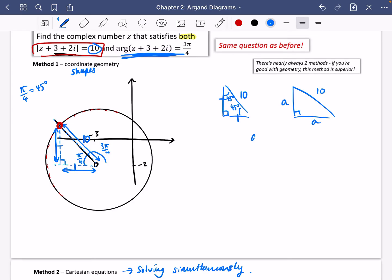I can just do Pythagoras. So a squared plus a squared equals 10 squared. In other words, 2a squared is 100. So a squared is 50. And so a is the square root of 50, which is the square root of 25 times the square root of 2, which is just 5 root 2. So this distance is 5 root 2. And this distance is 5 root 2.